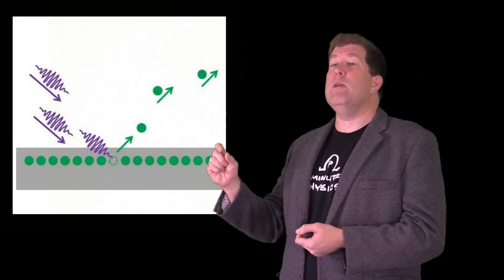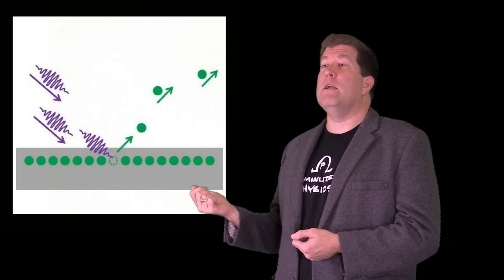He applied Planck's idea to the light itself, saying that light, which everyone knew was a wave, is actually a stream of photons, little particles, each carrying a discrete amount of energy with the amount determined by the rule that Planck introduced.